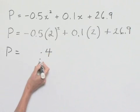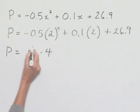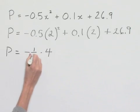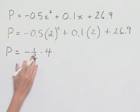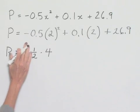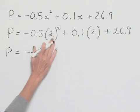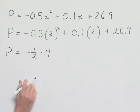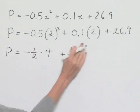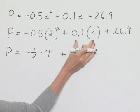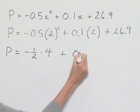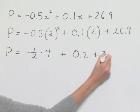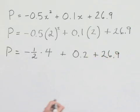We're then going to multiply that times negative 5 tenths. I'm going to go ahead and rewrite that as a fraction to make my multiplication easier. 5 tenths is the same as 1 half, so we'll have negative 1 half times 4. Let's go ahead and multiply in our middle term. We have 1 tenth times 2 to give us 2 tenths, and then we bring down our last term of 26 and 9 tenths.